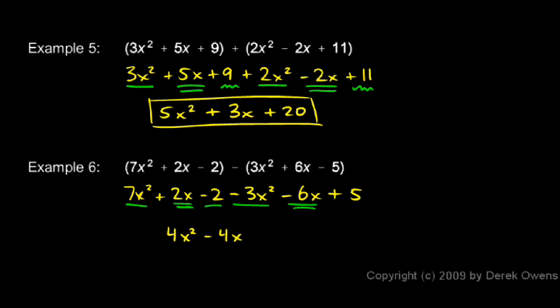And we have the -2 and the 5. That combines to give us a positive 3. So 4x² - 4x + 3.